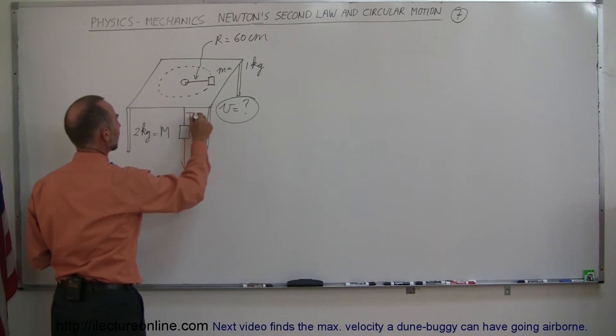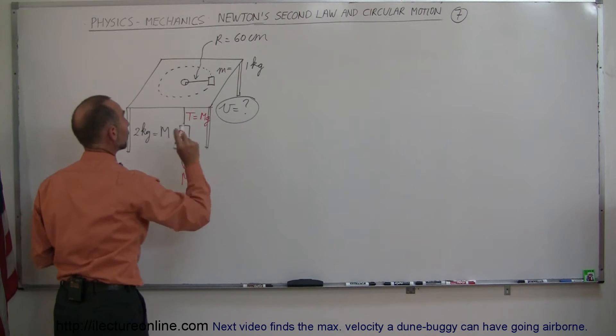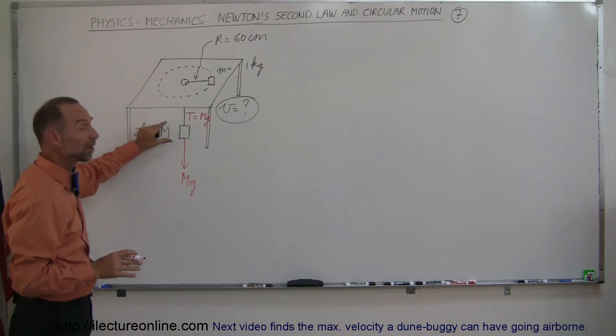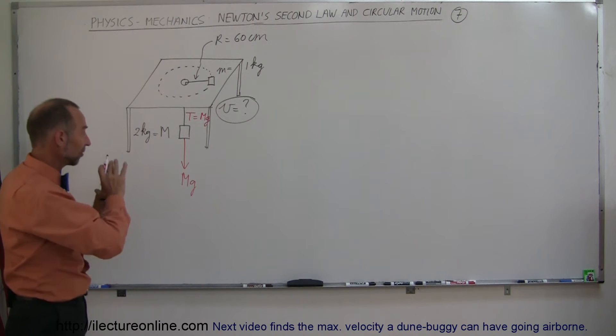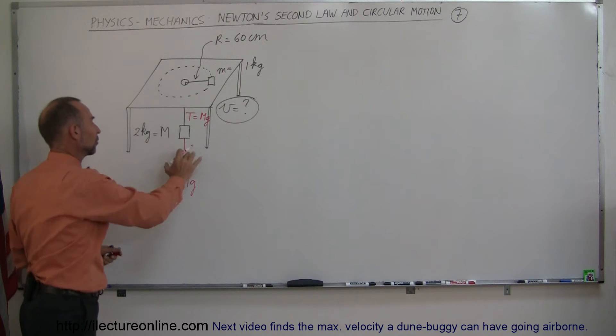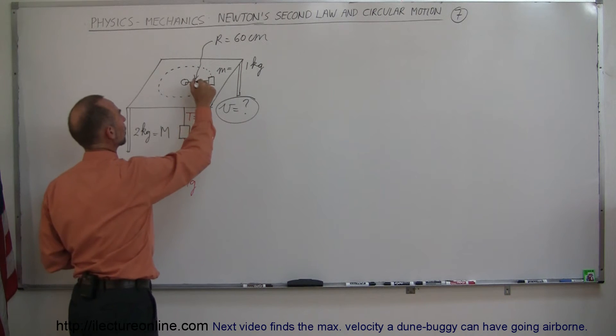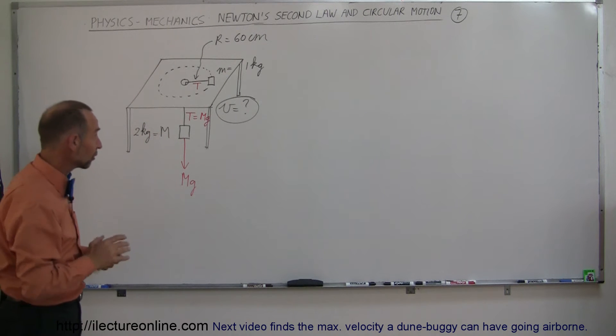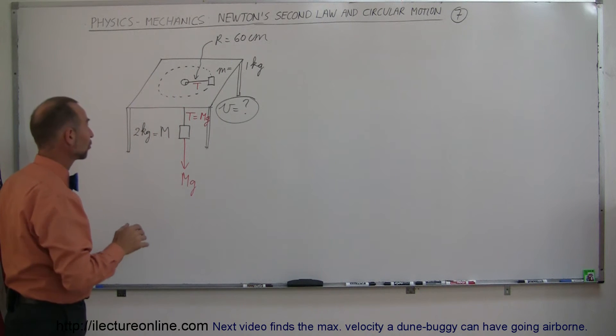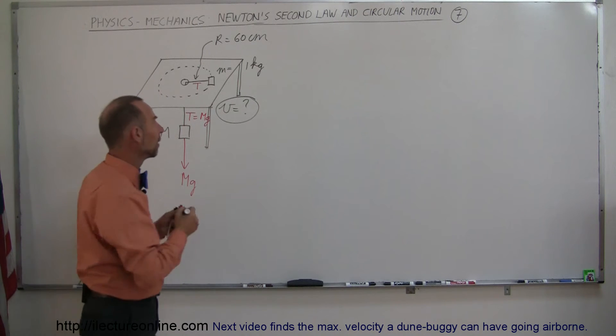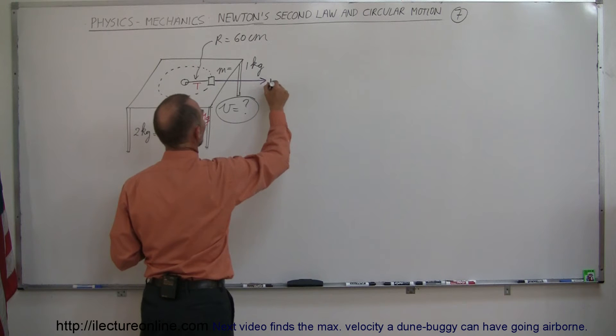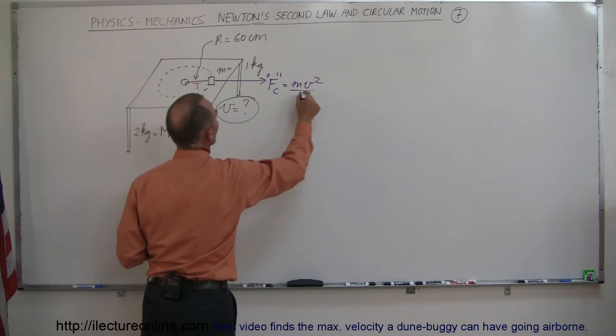The reason why we can say that is because this object is not accelerating upward or downward but staying right in its place. So we know that that's a static situation. So this equals the weight, that means the tension here is equal to the tension over there which then should be equal to what we would call the centrifugal force which tries to push this object to the right. Again, that's not a real force but it appears as if something is magically pushing to the right, F sub C called centrifugal force which is equal to MV squared over R.